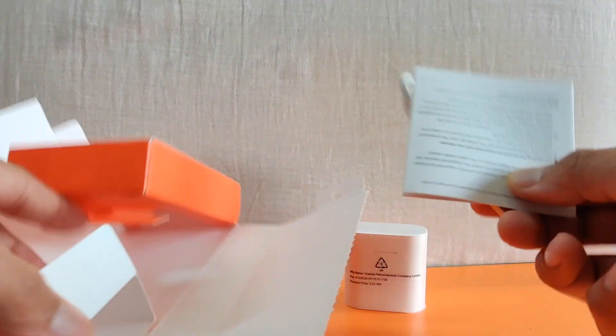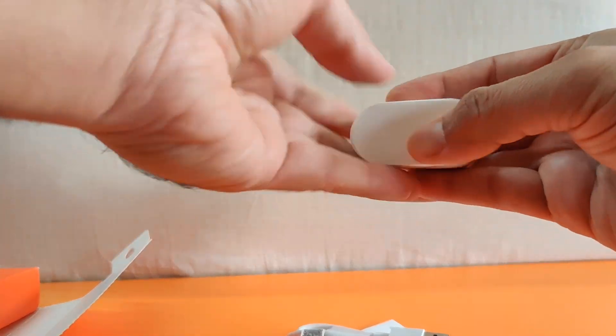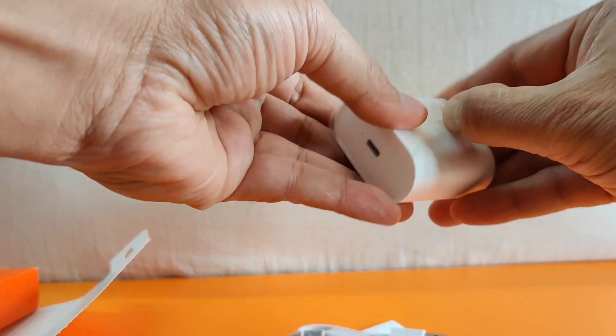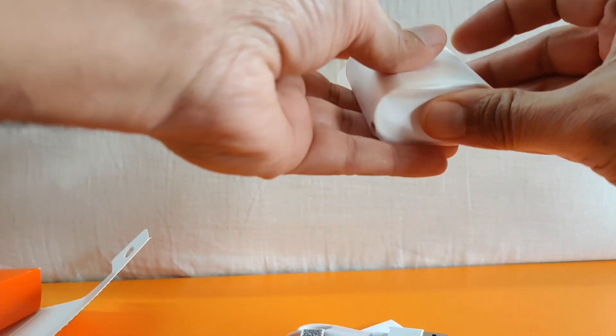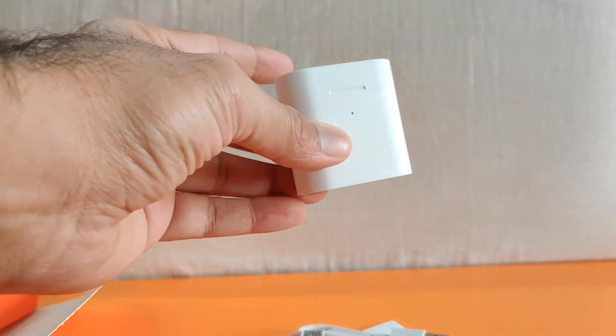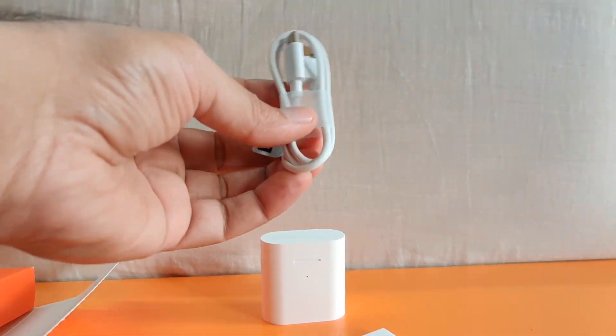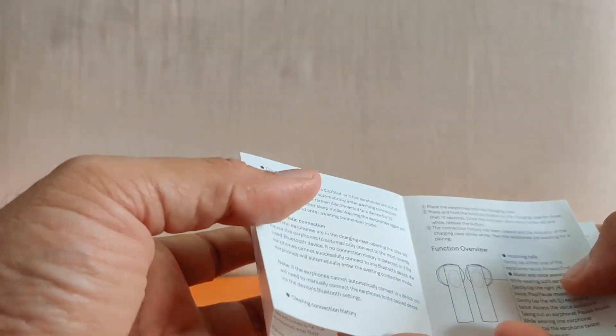So these are the contents that you get in the box. You get these Mi True Wireless Earphones, TWS2. They are in this plastic wrapping. So this is how it looks. And here you have a charging cable which is type A to type C and a small leaflet which is a user guide and it tells you what's where.